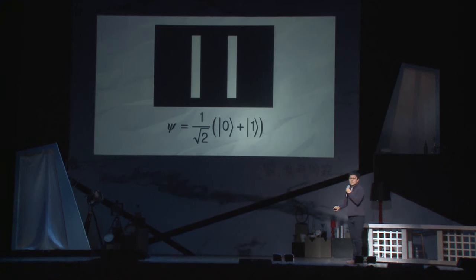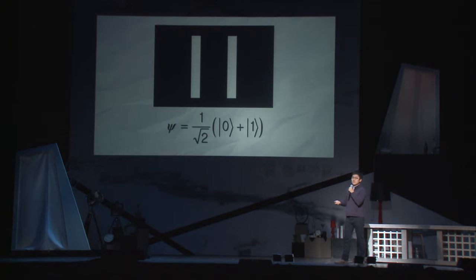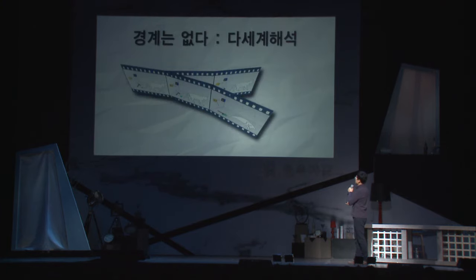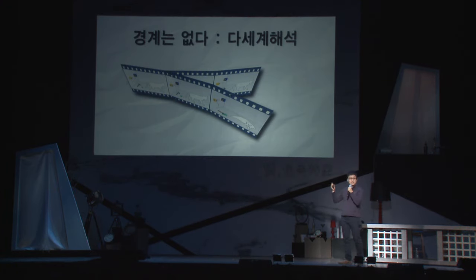하지만 여전히 양자역학의 해석 부분에 대해서 할 말이 좀 더 있습니다. 바로 여러분들이 좋아하시는 다세계 해석, 평행우주입니다. 이런 말도 안 되는 해석이 어떻게 나오는지는 바로 슈뢰딩거의 고양이 역설에서 금방 설명할 수가 있습니다.